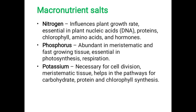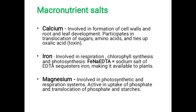Key macronutrients and their roles: nitrogen influences plant growth rate and is essential in nucleic acids, DNA, proteins, chlorophyll, amino acids, and hormones. Phosphorus is abundant in meristematic and fast-growing tissue, essential in photosynthesis and respiration. Potassium is necessary for cell division and meristematic tissue, and helps in carbohydrate, protein, and chlorophyll synthesis. Calcium is involved in cell wall formation, root and leaf development, and translocation of sugars and amino acids.